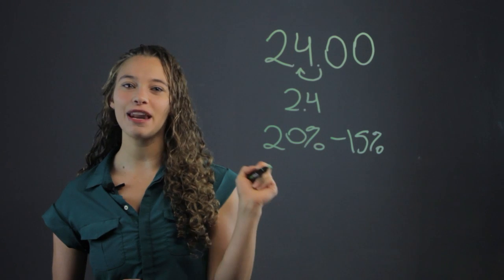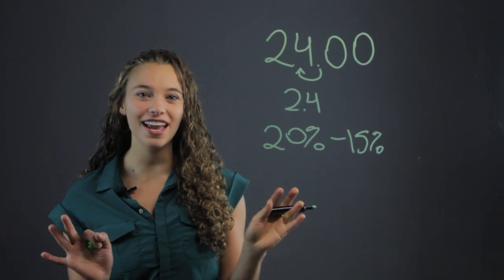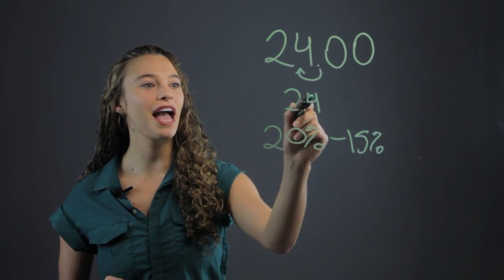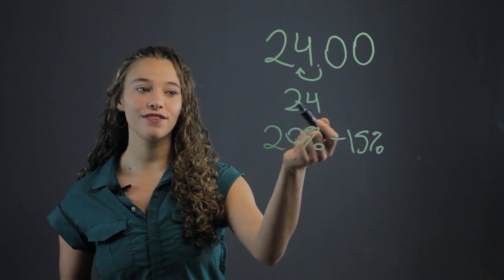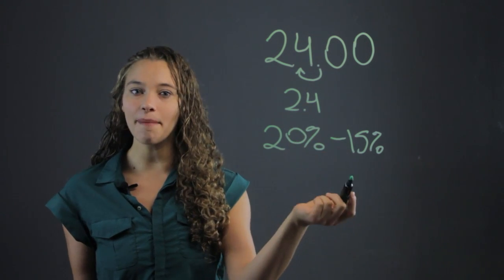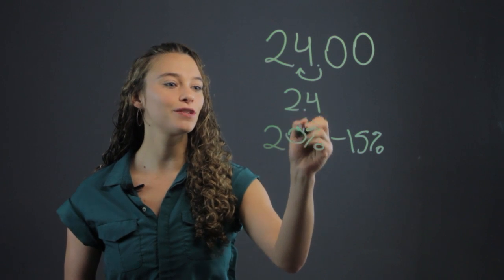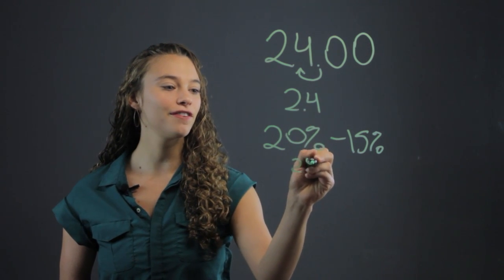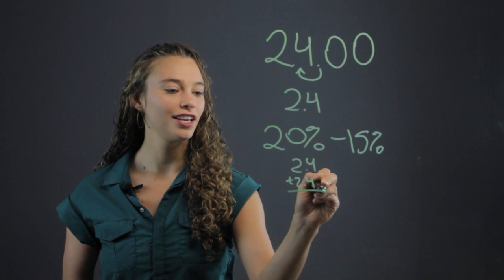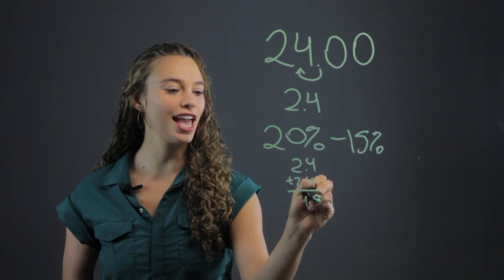So let's look at the 20% first. Let's say they had a great waitress or waiter, and they want to give a good tip. So we have the 10%. Well, to find 20%, we just double it. 10% plus 10% is 20%. So for the 20%, we do 2.4 plus 2.4, and we get 4.8.